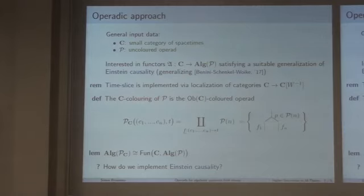So we start with some more general input data. We start with a small category of spacetimes and an uncolored operad. I won't go into the definition of an operad, but an operad is a certain algebraic gadget with elements which can have multiple inputs. So we have, in a way, many-to-one operations. And we are now interested in functors from the spacetime category to the algebras over an operad. An operad, in a way, encodes algebraic structures.